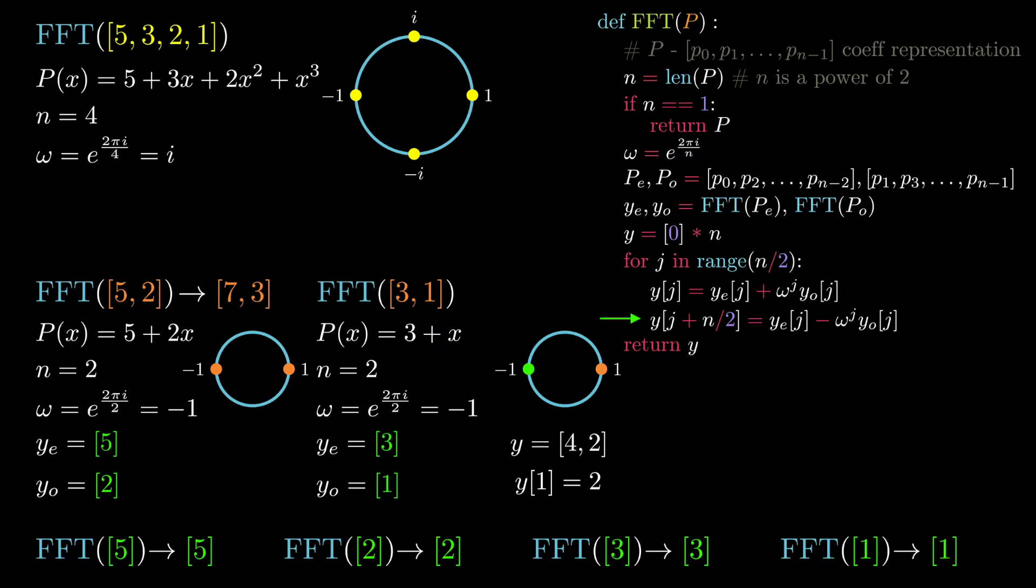Now onto the key step. After we get the return values of the recursive calls on the even and odd degree term polynomials, this is then assigned to the ye and yo variables in our current call.